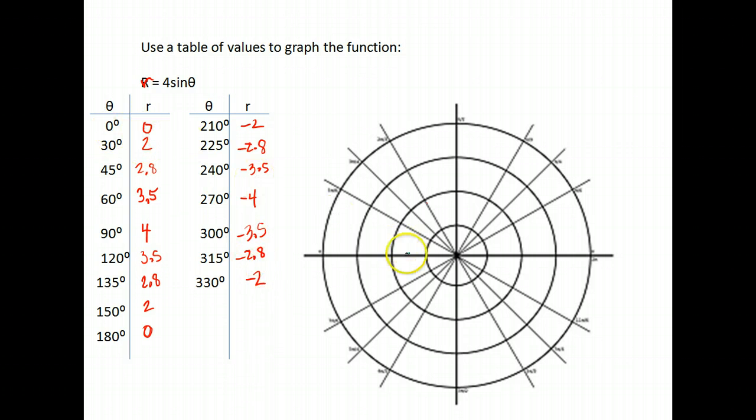Okay, so let's plot those points. We have the point 0, 0. We have the point 30, 2. So we open up to the 30 degree angle and go out 1, 2.